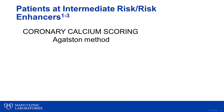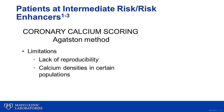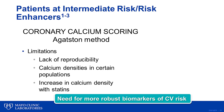Patients at intermediate risk or presenting with risk enhancers — the current guidelines recommend further risk stratification using different tests, such as high-sensitivity CRP or coronary calcium scoring, of which the most widespread method is the Agatston method. However, this method is not without limitations: there are important limitations related to reproducibility, certain calcium densities in certain populations, and we know that calcium density will increase when we start patients on statins — again emphasizing how importantly we need more robust biomarkers of cardiovascular risk.